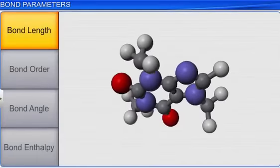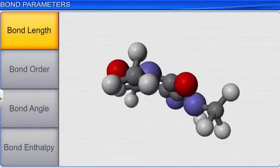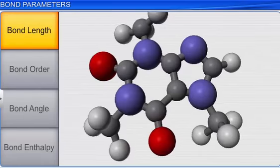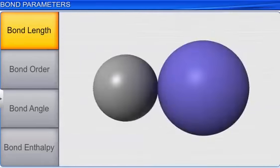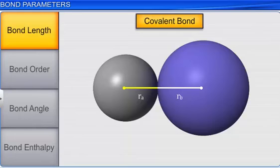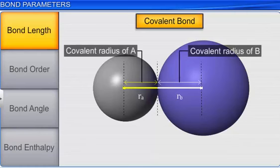Bond length is the distance between the nuclei of the atoms that are bonded together. It is directly related to the radius of each atom in the bonded pair. In a covalent bond, the radius of each atom forming the bond is called the covalent radius of the atom.